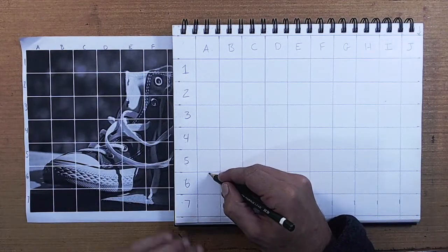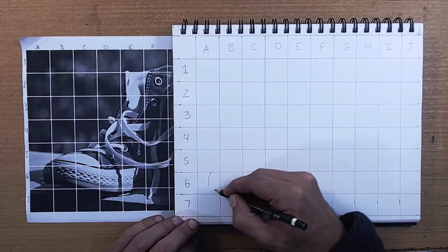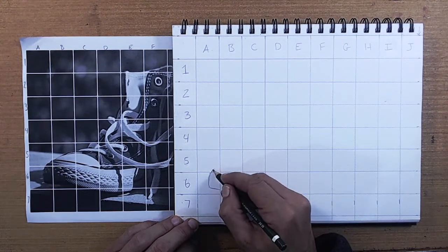Alright, so it looks like we can start our shoe in row 6, column A.